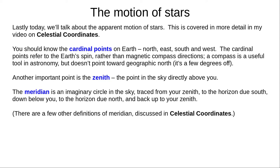There are a few definitions of meridian. The one we're using today is an imaginary circle in the sky. Trace a circle from your zenith above you, down to the horizon due south, then down below you and around to the horizon due north, and finally back up to your zenith. All points on this circle in the sky are on your meridian.